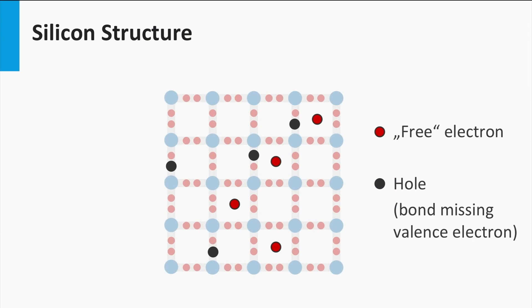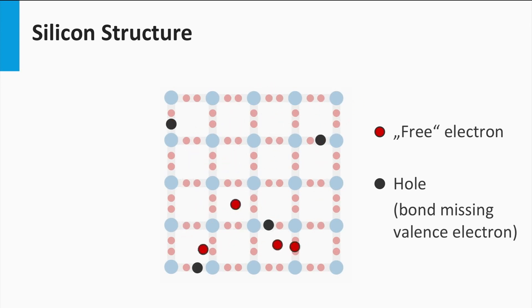In this schematic silicon network we put some charge carriers. The animation shows the mobile electrons, indicated by the red dots, and the holes, indicated by the black dots. Holes are part of a molecular bond in which one of the two valence electrons is missing. Both electrons and holes can move freely around. So far we have discussed that we can manipulate the density of free charge carriers using temperature — the higher the temperature, the more free electrons and free holes can be excited.